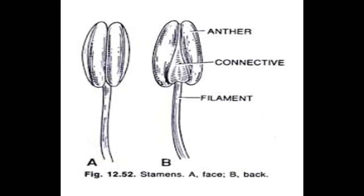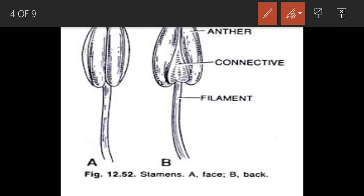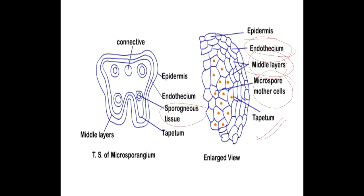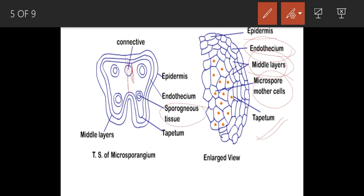What will happen first in the anther lobe? I told you that there is a sterile tissue present which we call connective. This connective will be dissolved in the mature anther. As a result, each lobe will contain only two theca. When the sterile layer connective dissolves, the anther will become dithecous. That means after this tissue dissolves, only two lobes will remain.